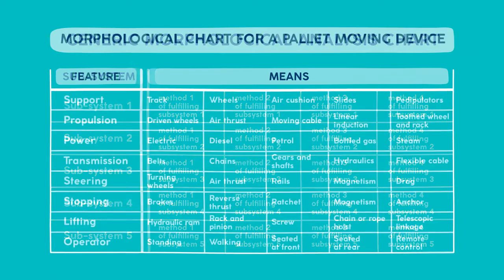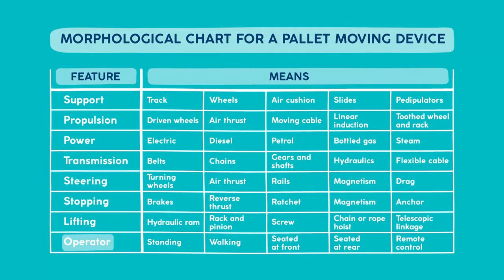Here's an example chart. This is for a device to move pallets around a factory, warehouse or loading bay. One might envisage that a generic pallet moving device would comprise subsystems for support, propulsion, power transmission, steering, stopping, lifting and operation. A series of ideas or means for fulfilling each of these has been developed in the chart.